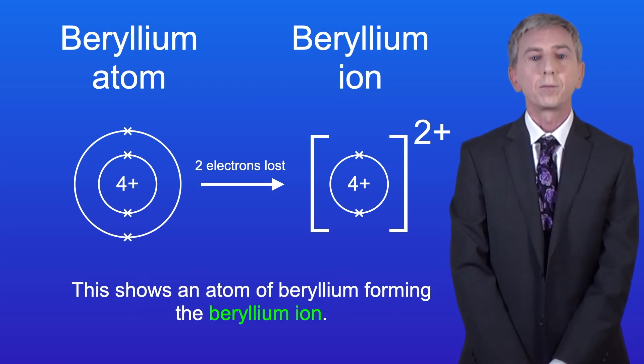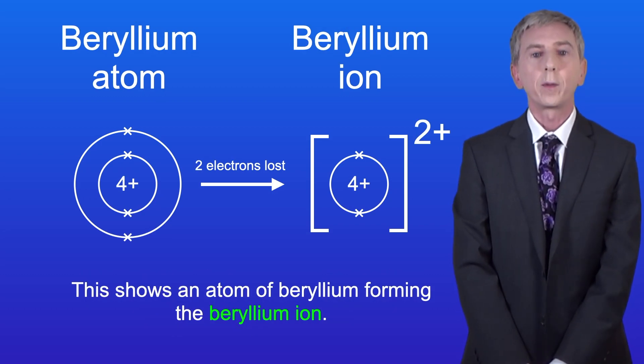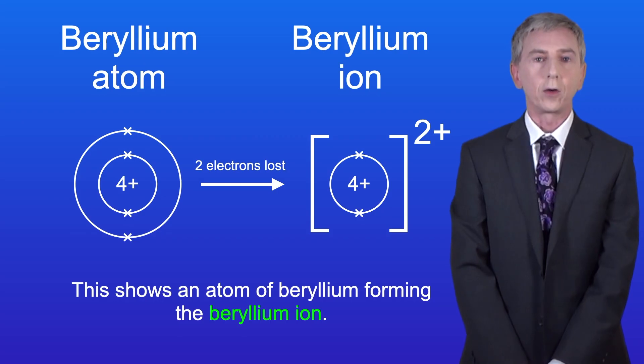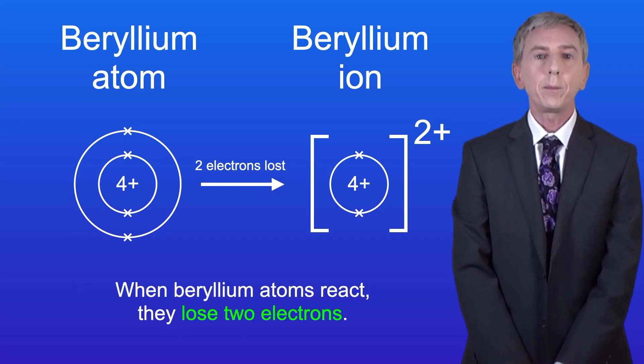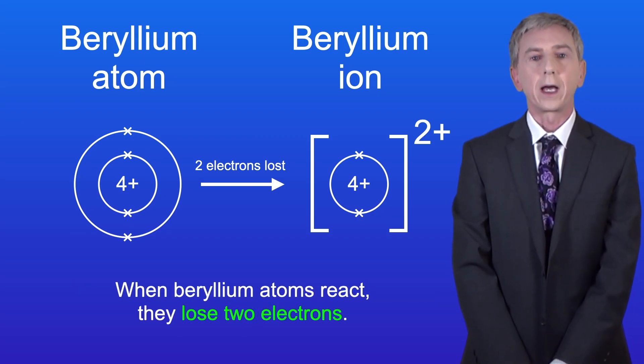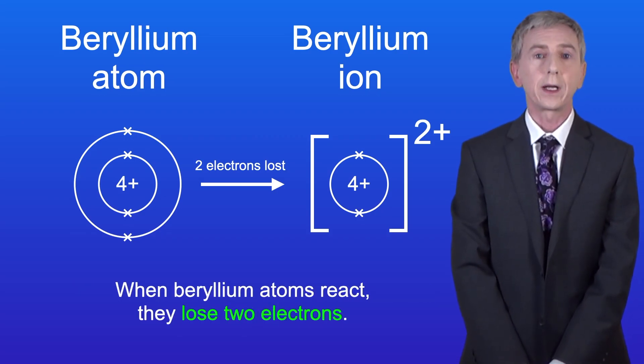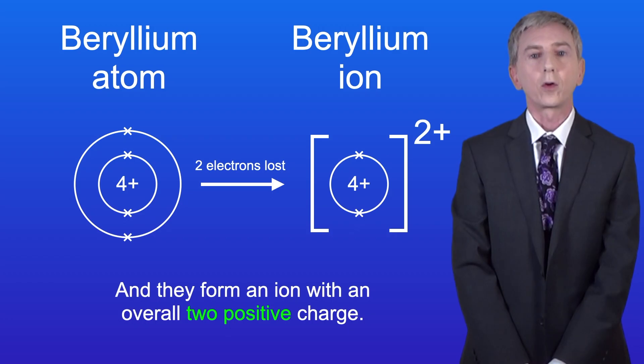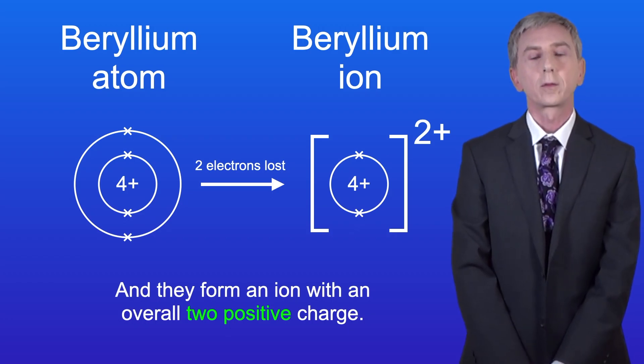This shows an atom of beryllium forming the beryllium ion. When beryllium atoms react, they lose two electrons, and they form an ion with an overall two positive charge.